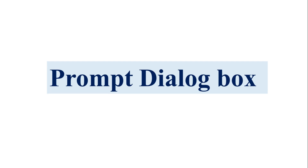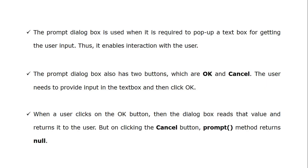Today we are going to discuss about one of the most important types of dialogue boxes in JavaScript, and that is a prompt dialogue box. There are 3 types of dialogue boxes in JavaScript: the alert dialogue box, the confirm dialogue box, and the prompt dialogue box. In the previous lecture we already discussed what is meant by dialogue box and also discussed the alert and confirm dialogue box in detail with examples. Today we are going to discuss the prompt dialogue box and see an example program.